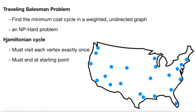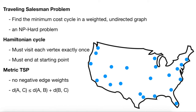What we're looking for is a Hamiltonian cycle, which means we must visit each vertex exactly once — not twice, not zero times, each vertex exactly once. And each city is a vertex, of course. We must end at our starting point. What we're going to solve is called the metric TSP problem, which means there are no negative edge weights — there's a positive distance, some distance greater than or equal to zero, between any two cities.